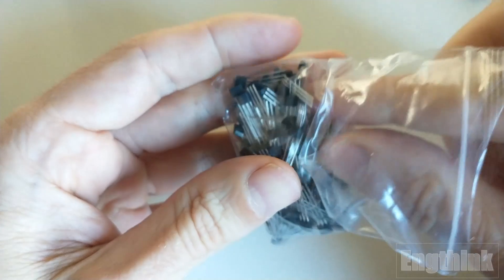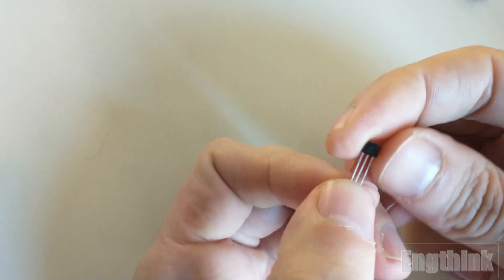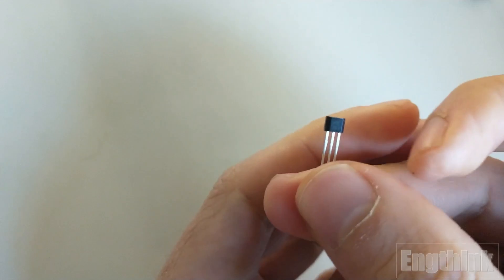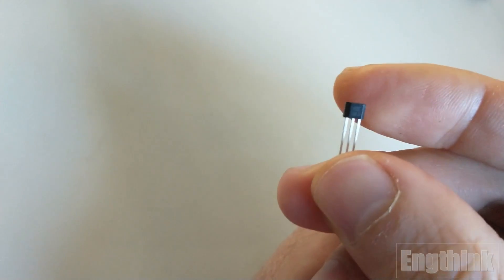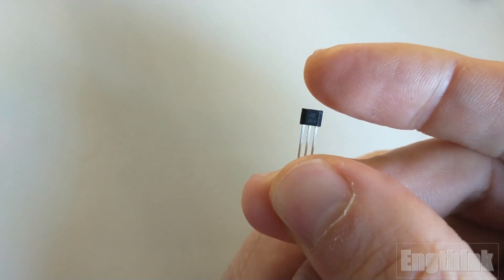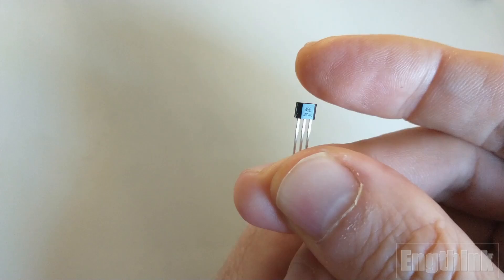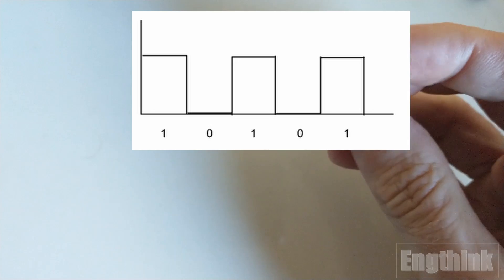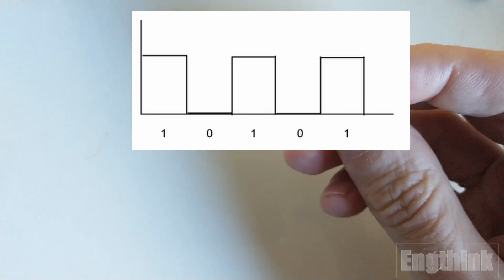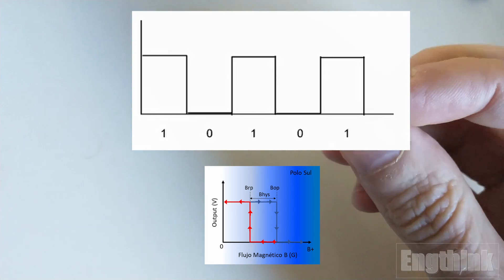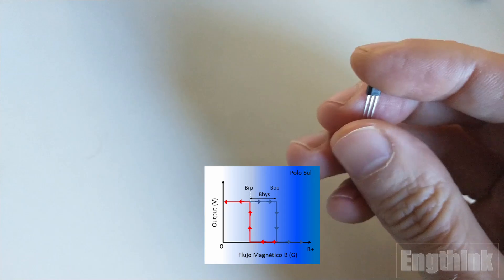This particular model exhibits a distinct characteristic when we analyze the signal generated at the output. Essentially, we can classify Hall effect sensors in two different models when examining the output. Let's consider that the most common Hall effect sensors have an output capable of generating digital signals, represented with 1s and 0s indicating the presence or absence of voltage in the output.